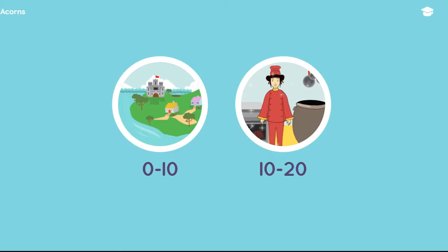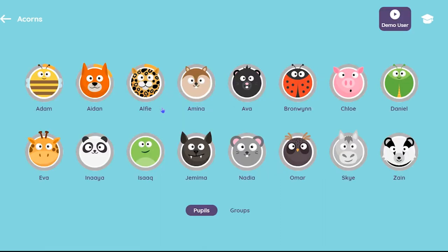If you have a 0 to 20 package, you'll be given the option of accessing the 0 to 10 or 10 to 20 content. Select the 0 to 10 option and you'll be taken to the class dashboard.